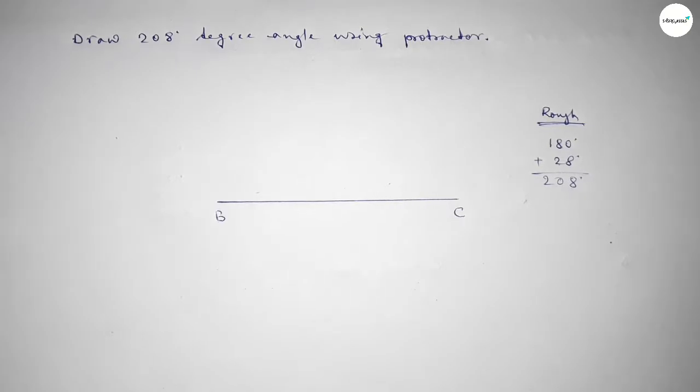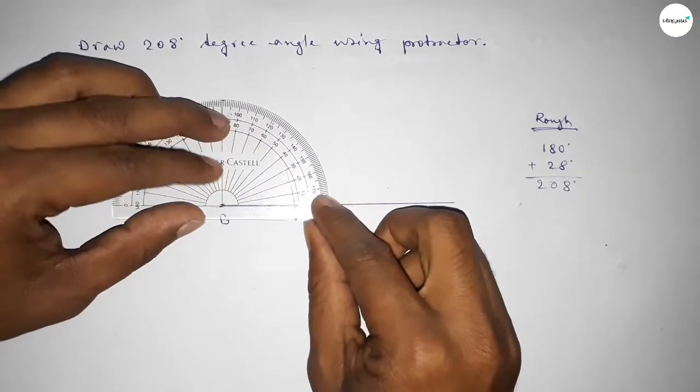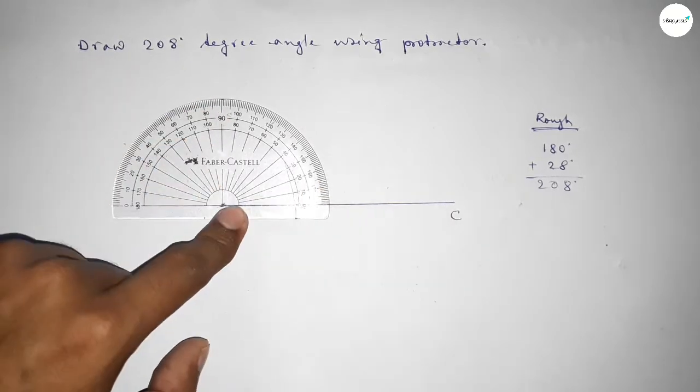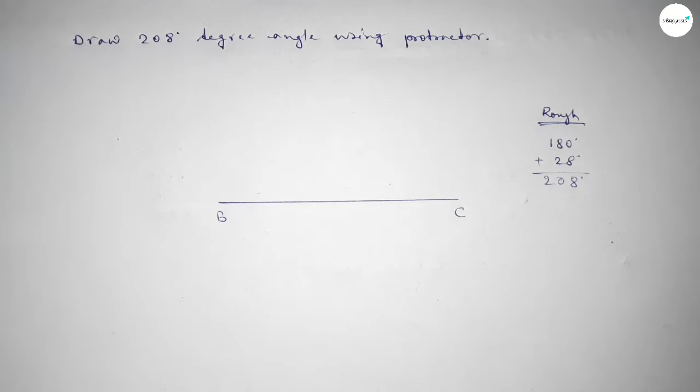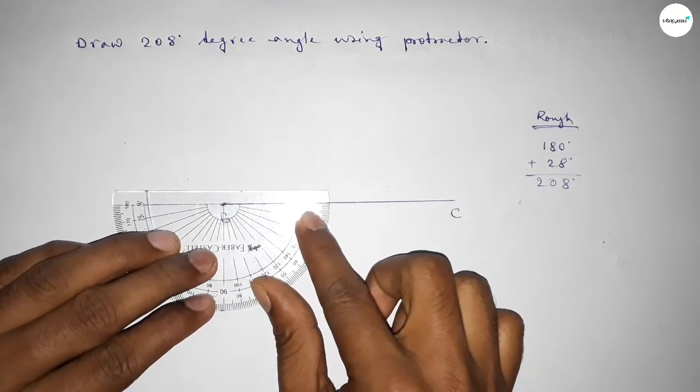First we have to draw 180 degree angle. So putting the protractor on point B and counting 180 degree. So this is total 180 degree. Plus, putting the protractor on point B by this way.